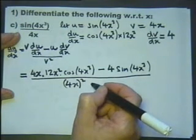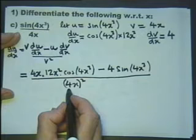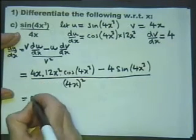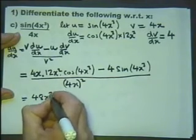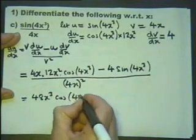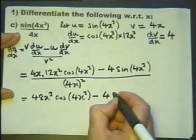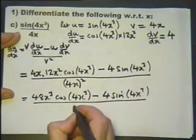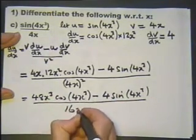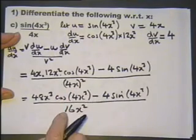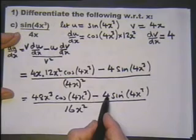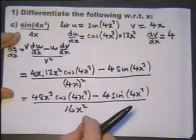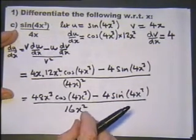Now how can we tidy this up? Well, we can't do a lot with this, can we? That's 48x cubed cosine 4x cubed minus 4 sine 4x cubed over—or we could write that as 16, I suppose. 4x all squared is 16x squared. We could factorize the 4 out of there and 4 out of there and cancel the 4 at the bottom and make it a little bit simplified. But I don't think that's going to make a lot of difference. It's not a big simplification, so we'll stop there.